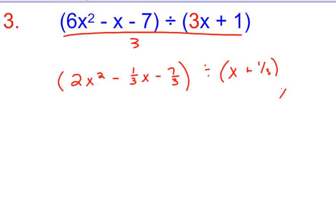Divided by x + 1/3. So now, on the side, I'll take what I'm dividing by and set it equal to 0 and solve. So I get x to be -1/3. I put that over here in my little box. And then I'm going to list each coefficient. So 2, -1/3, -7/3.